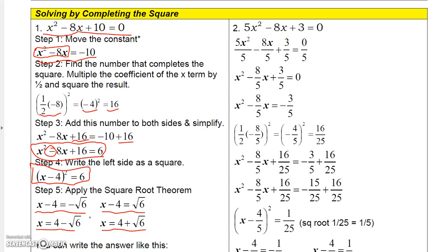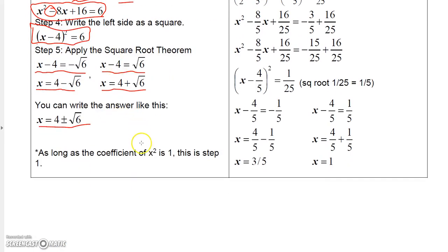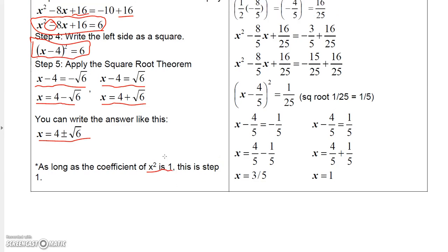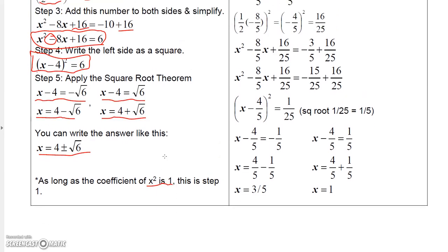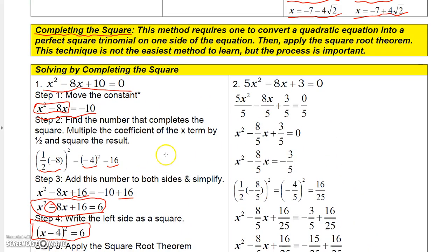Now, moving the constant is your first step — but with a little asterisk. That's your first step only if the coefficient of x squared is 1. If the coefficient is not 1, you first have to make that coefficient equal to 1.